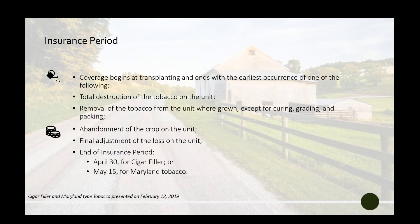The insurance period begins when the tobacco is transplanted to the field and can end in a variety of ways: total destruction, removal (except for normal reasons like curing, grading, and packing), and abandonment of the crop will all end the insurance period. Another way the insurance period ends is if a claim is finalized on the unit. If none of these occur, the insurance period ends April 30th for the cigar filler and May 15th for the Maryland type. The end of insurance is the only variance in dates between the two tobacco crops.